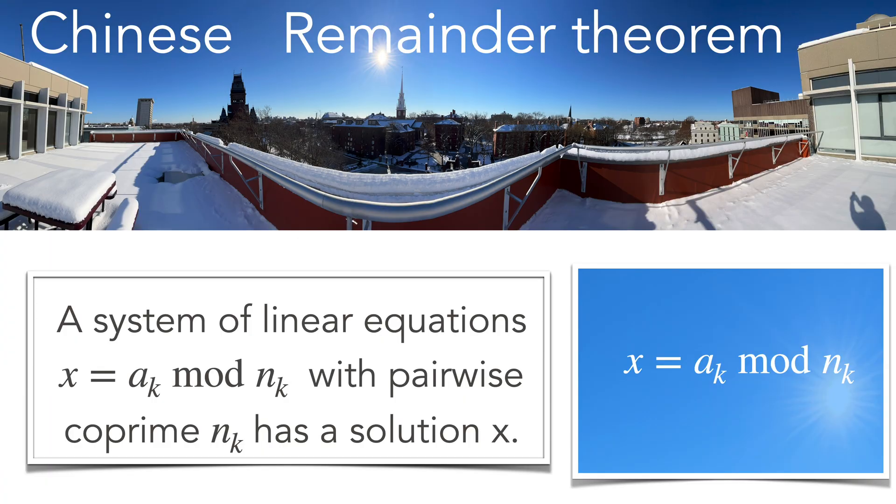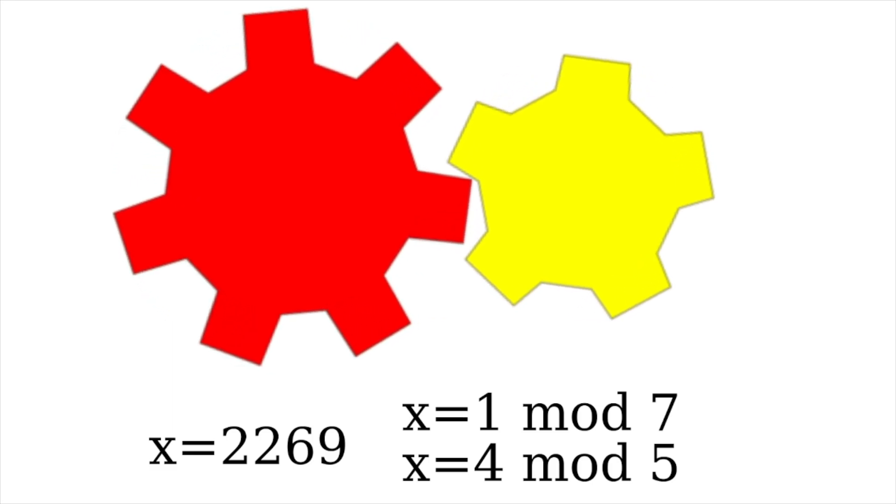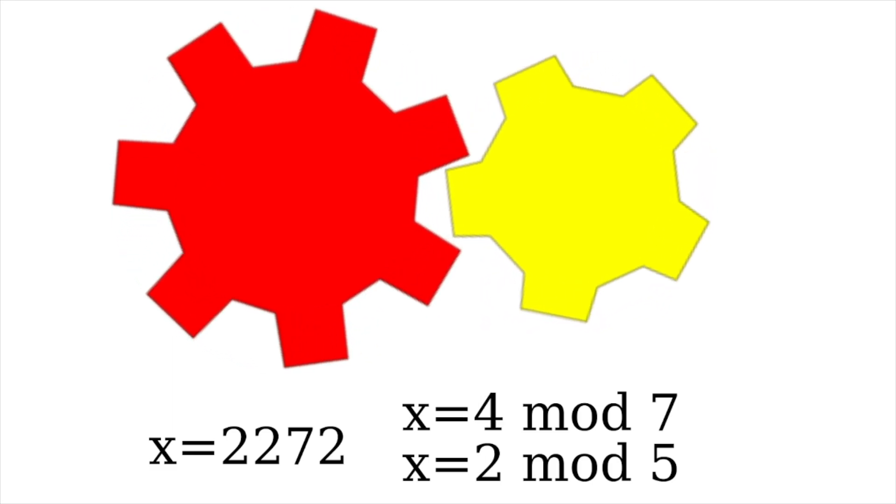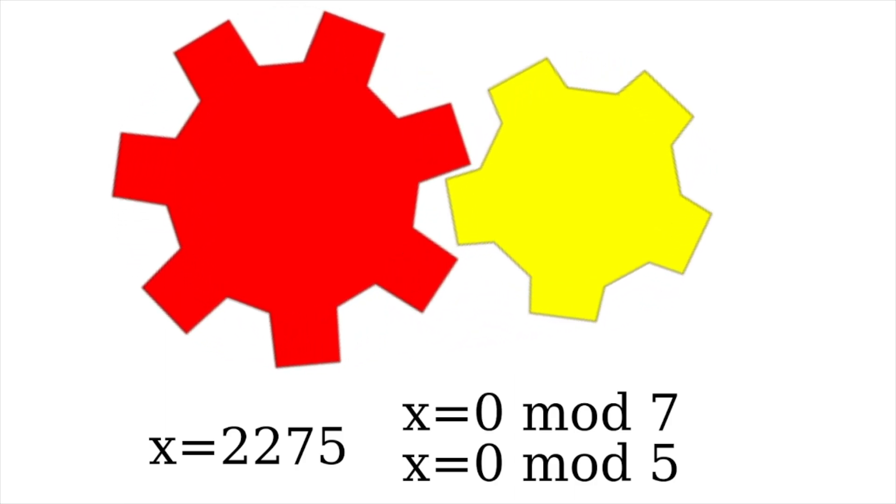The Chinese remainder theorem, finally, one of the oldest theorems also in mathematics, deals with a system of linear equations, modular equations, and any simultaneous system of linear equations has a solution as long as the moduli are pairwise, as long as the moduli have no common divisors. So here this is illustrated. In fact, you have two gears. One has seven teeth, one has five teeth. You want two specific teeth to come together. You can actually find a time where this happens.